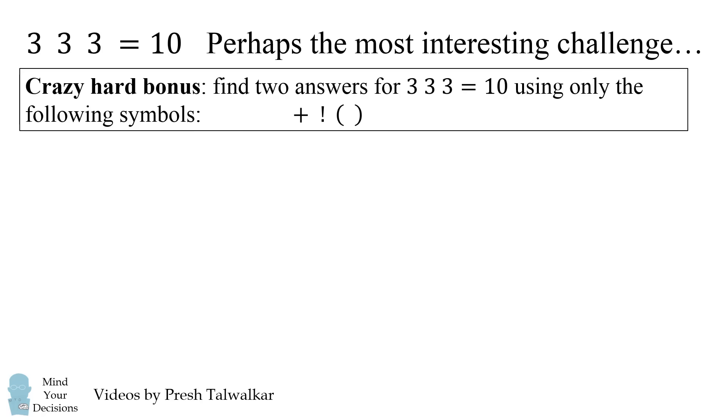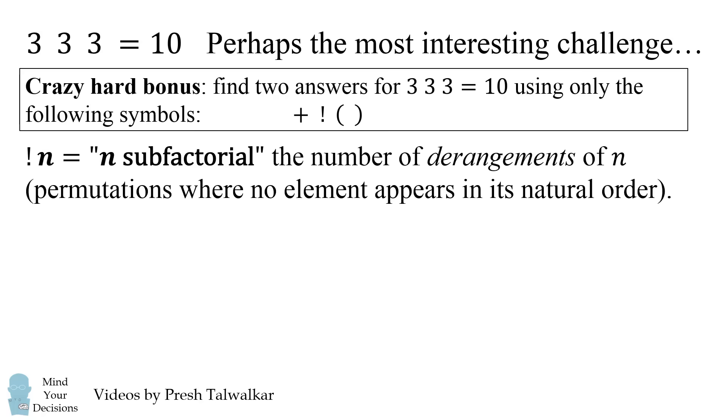But there's another way that you can use the exclamation point. Exclamation point n is read as n sub factorial. This is the number of derangements of n. These are permutations where no element appears in its natural order. So let's calculate some of these.